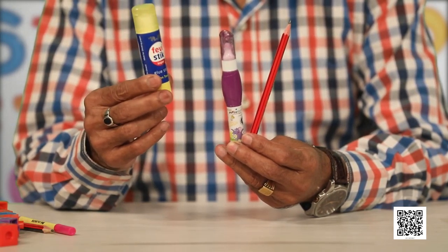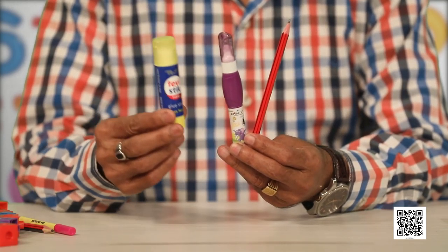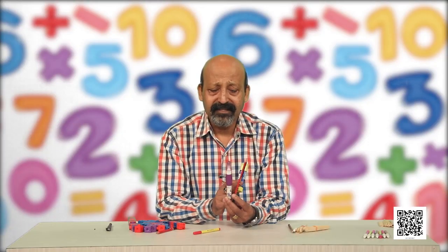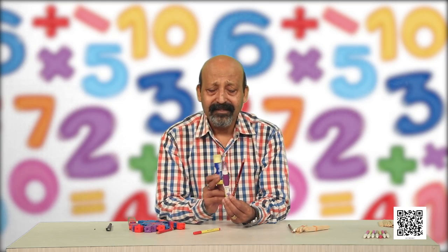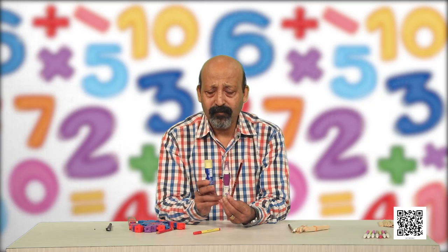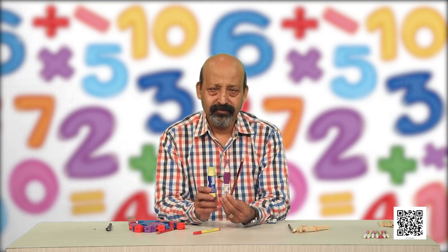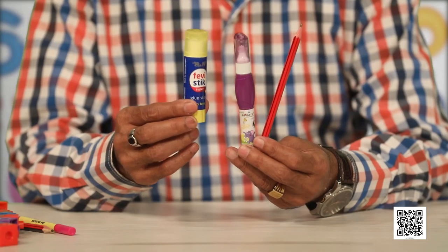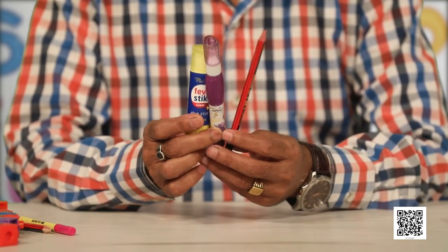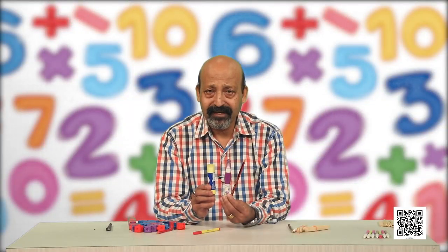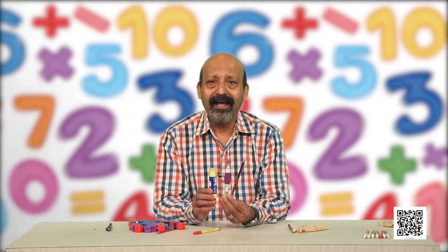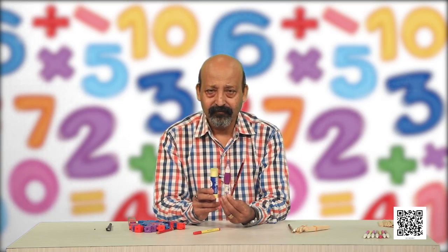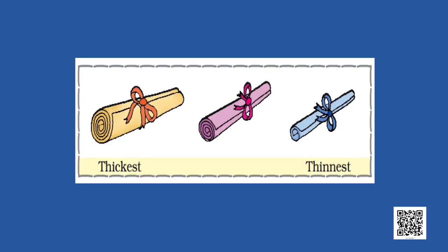Now, if we are having more than two objects, what can we say? I have these three objects with me. This stick is thicker than the white marker, and the white marker is thicker than the pencil. The pencil is thinner than the white marker, and the white marker is thinner than the glow stick. Can you tell me which is the thickest one? The pencil is the thinnest in these three objects, and the glow stick is the thickest. We use thickest and thinnest words for these.